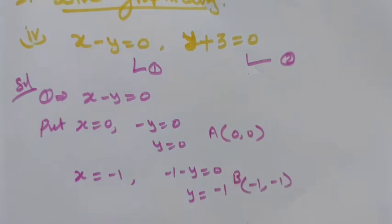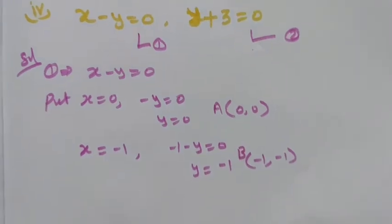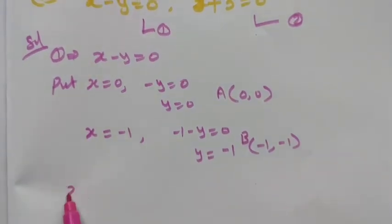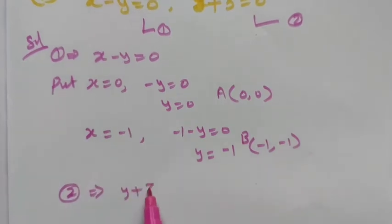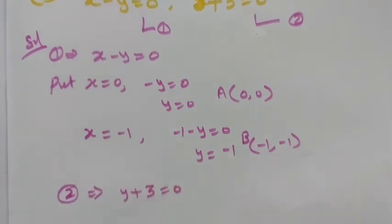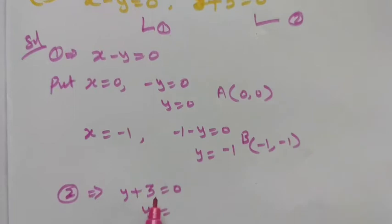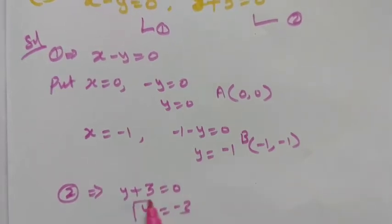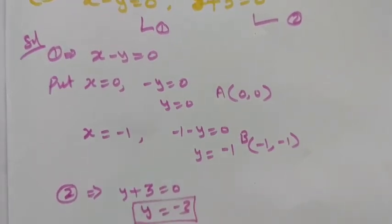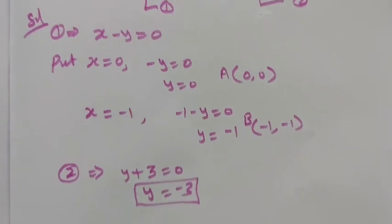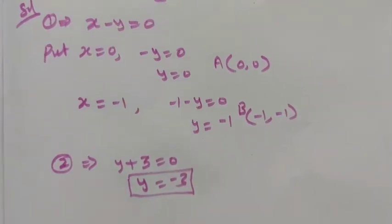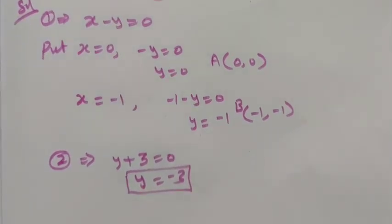From the second equation, y plus 3 equal to 0, we get y equal to minus 3. This means we get a straight line below the x-axis.